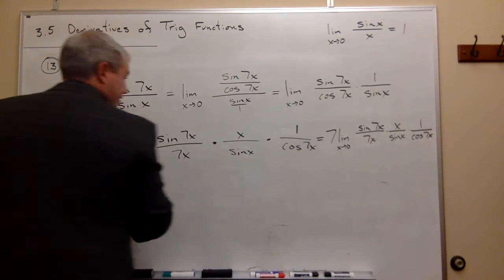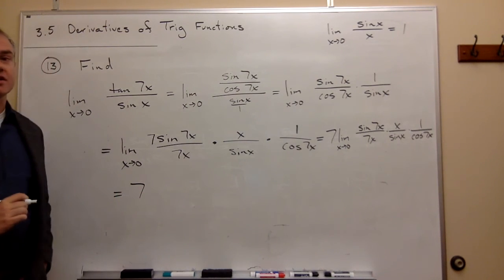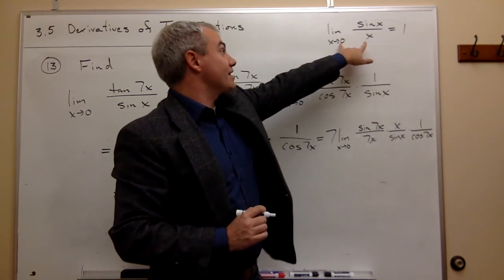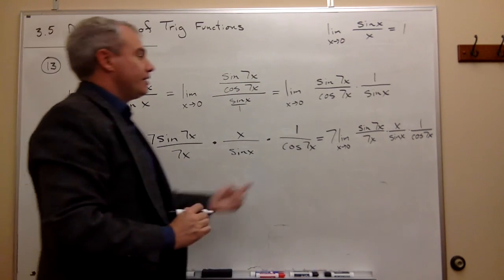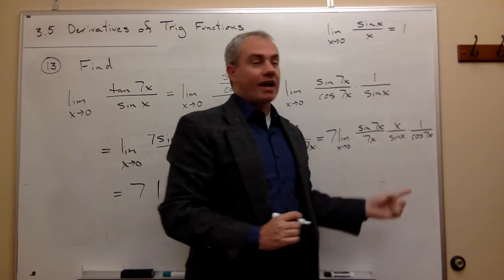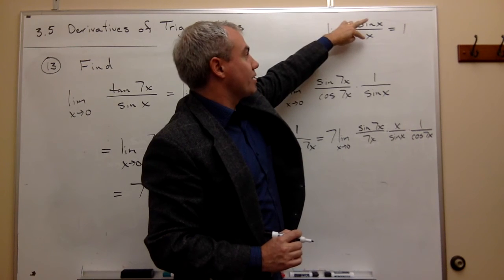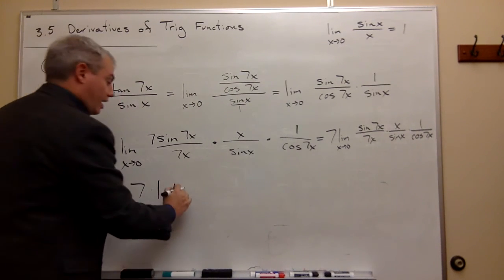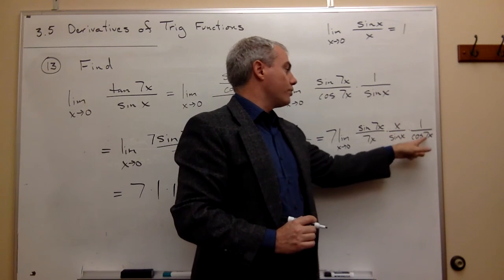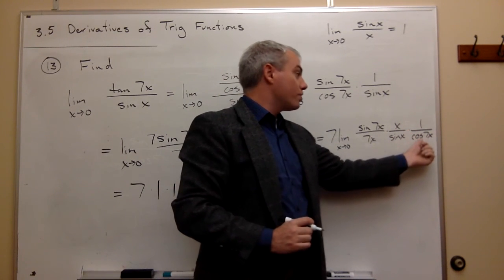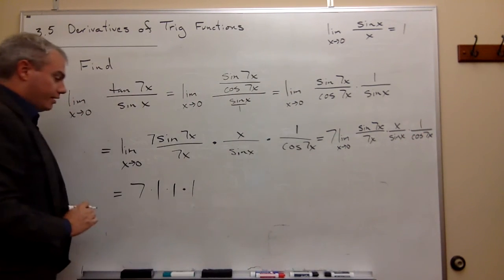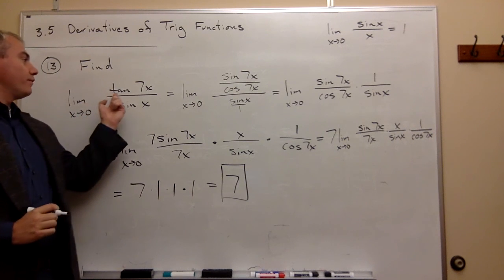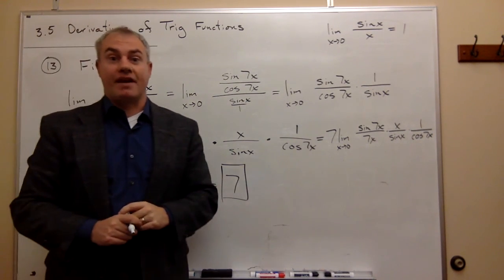Now let's look at each of these limits individually. The 7 stays out front as a constant. The limit as x goes to zero of sine of 7x over 7x has exactly the standard form, so that limit is 1. Then the limit as x goes to zero of x over sine of x — it doesn't matter which is on top or bottom, this still gives a limit of 1. And the limit as x goes to zero of 1 over cosine of 7x is 1 over cosine of 0, which is 1 over 1 = 1. So we get 7 times 1 times 1 times 1 = 7. The limit as x goes to zero of tan(7x) over sin(x) is 7.